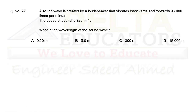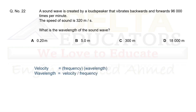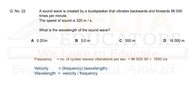Question 22. A sound wave is created by a loudspeaker vibrating 96,000 times per minute. The speed of sound is 320 m/s. Converting frequency: 96,000 / 60 = 1,600 Hz. Using wavelength = velocity / frequency: 320 / 1600 = 0.20 m. Correct option is A.